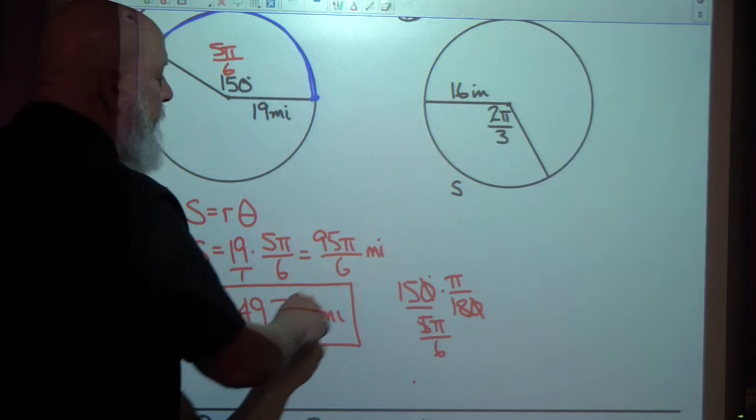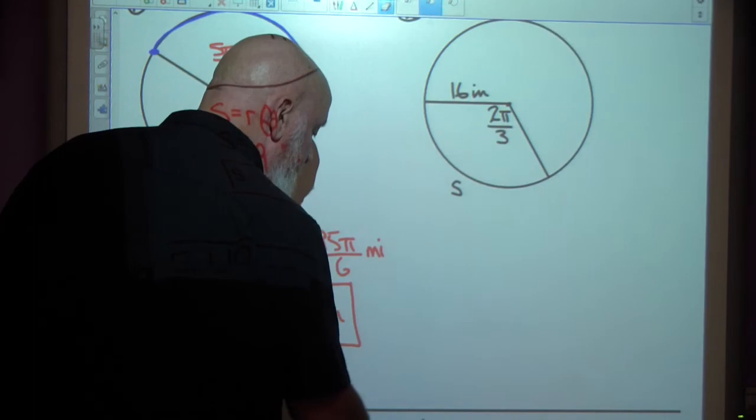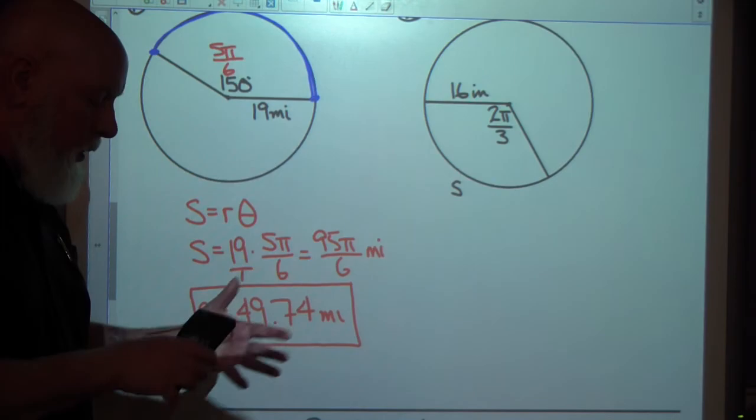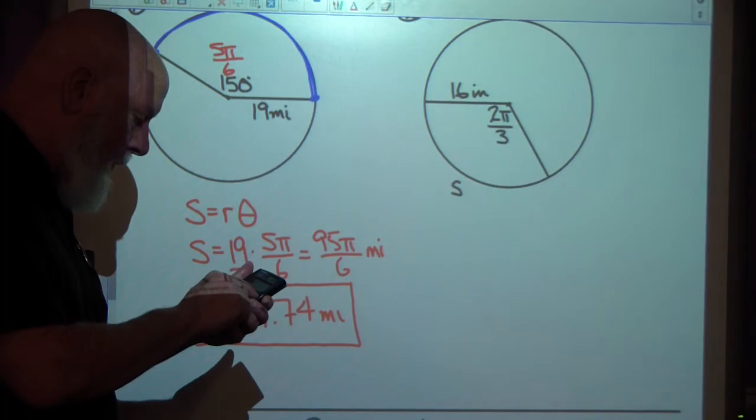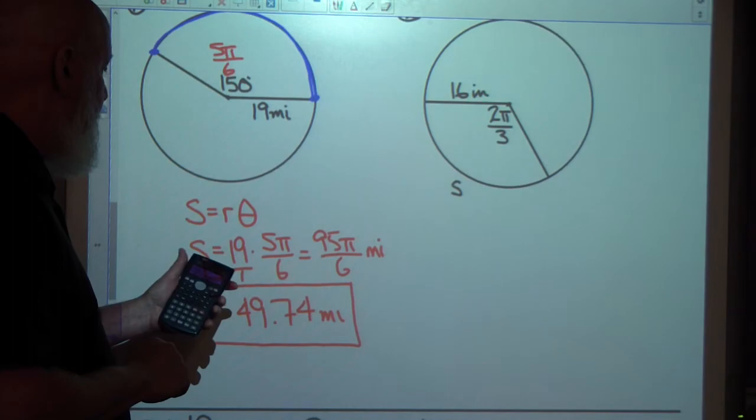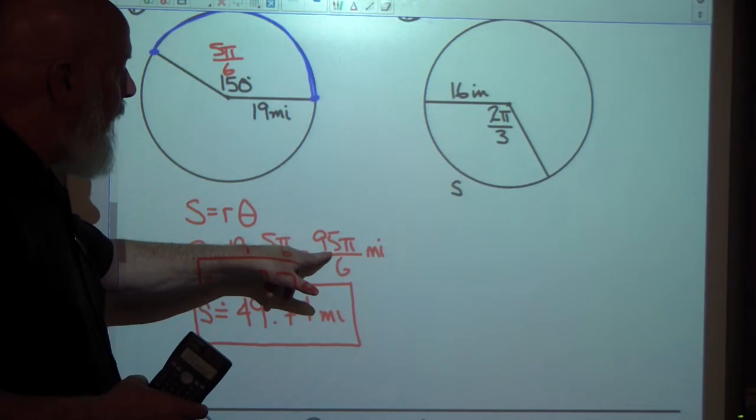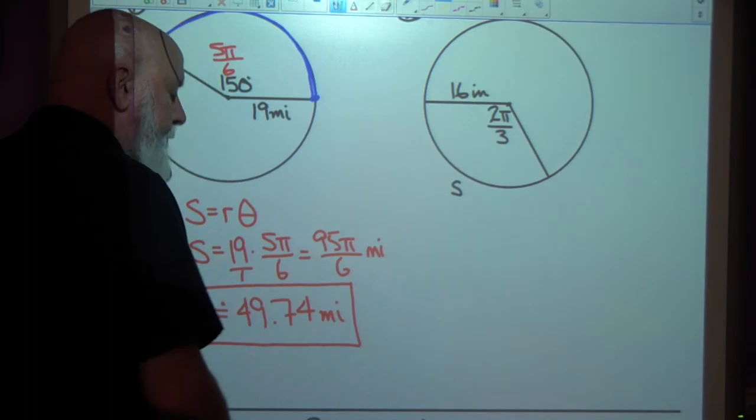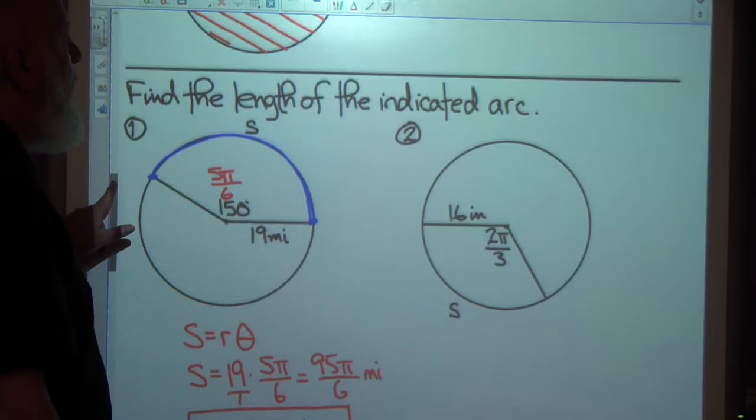And if you rounded it, it would be this. So, in my next one, I'll make sure that I simplify it in terms of pi and then give an approximation. Just in case the worksheet asks you for an approximation. Let's see if I get the same thing if I do it again. 95 times pi divided by 6 equals 49.74. Yeah. So, that's probably right. This is what the answer key gave us. They didn't round it to anything. How weird is that? Pretty weird.